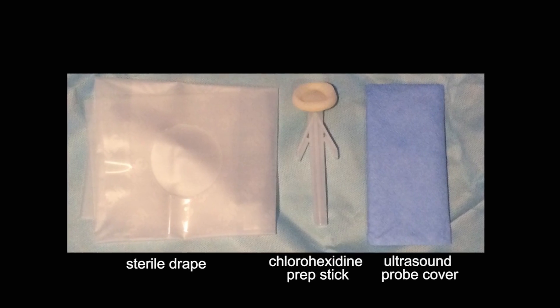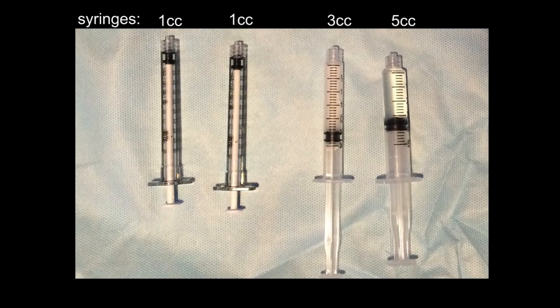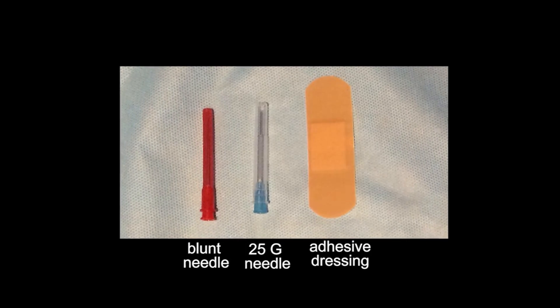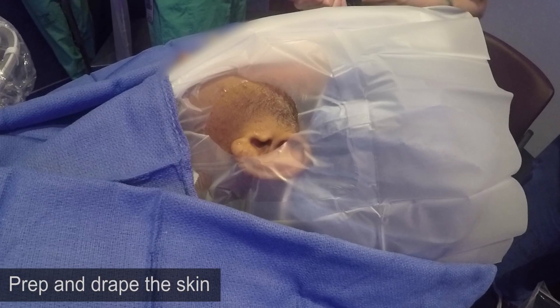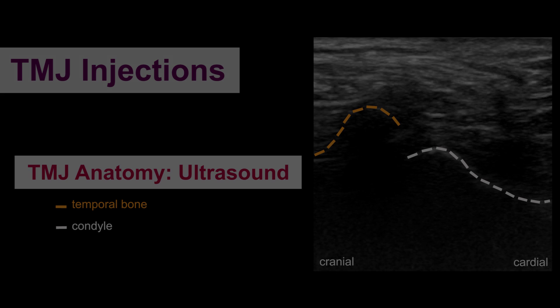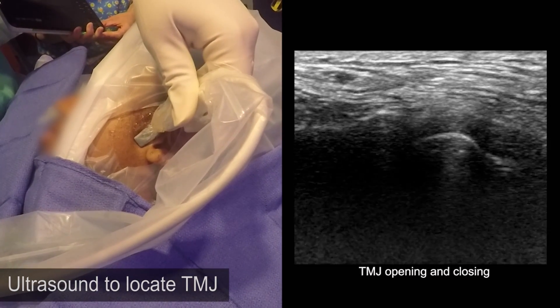Here are some of the items used during the procedure. The first step is to prepare the mixture, then prep and drape the skin, followed by ultrasound, which can highlight the temporal bone and condyle for easy needle access. The opening and closing of the TMJ further localizes the joint.